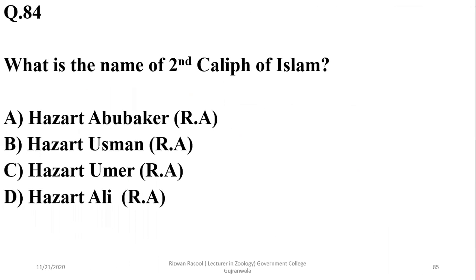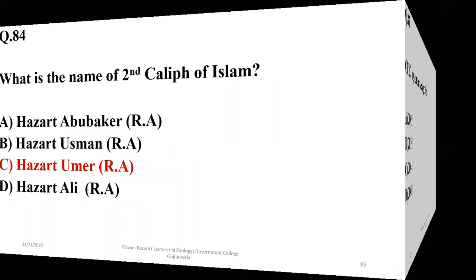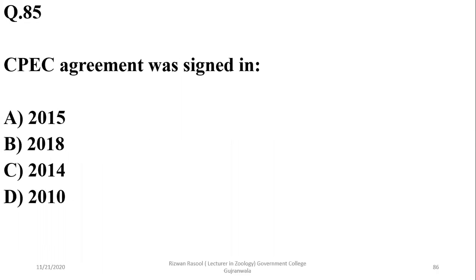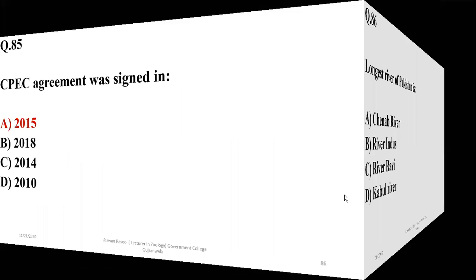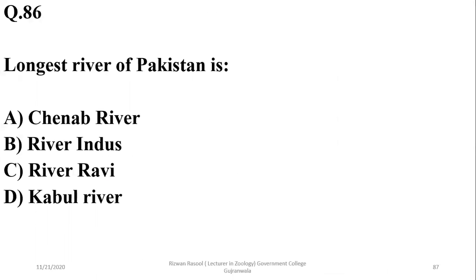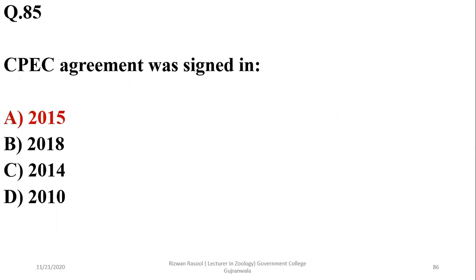What is the name of the second Caliph of Islam? It was the respectable Hazrat Umar. So the right option is C. The CPEC agreement was signed in 2015. So the right option is A.